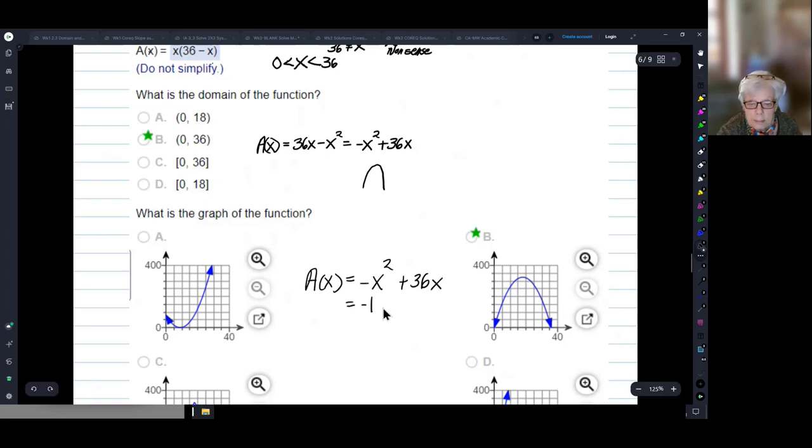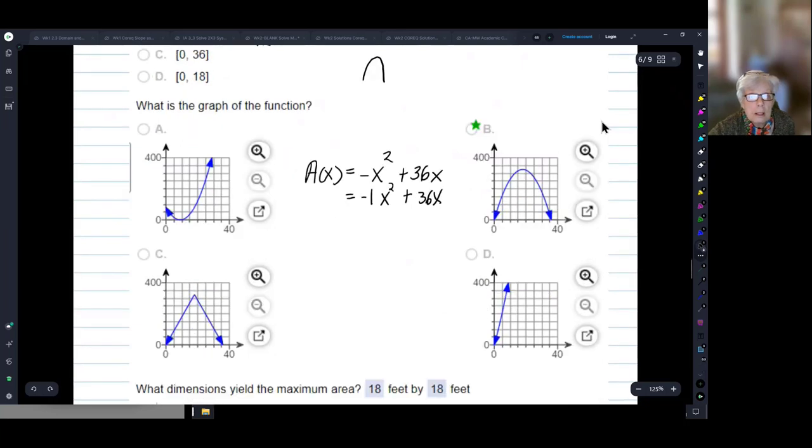That's negative 1 times x squared plus 36 times x. Okay, now it wants to know what the dimensions would be. It would be helpful if I found h and k, don't you think? At least h.